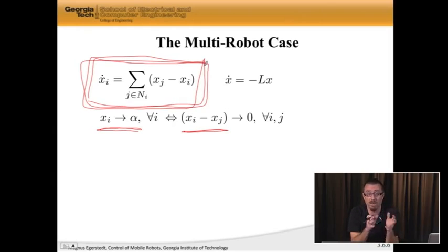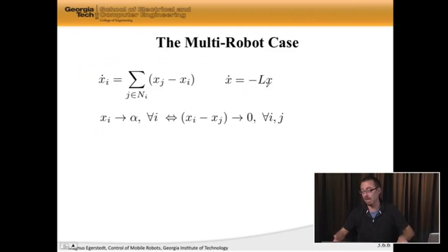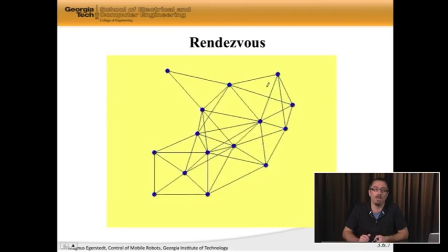In this case, they were agreeing on position. But this equation actually will solve the rendezvous problem, because of the fact that the corresponding system matrix you get, which is negative L, has the right eigenvalues, which means that the system is critically stable. So we can solve rendezvous in the multi-robot case.